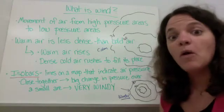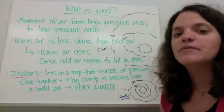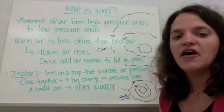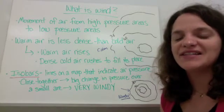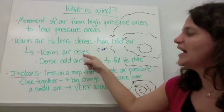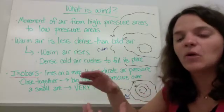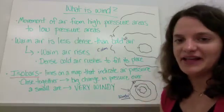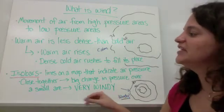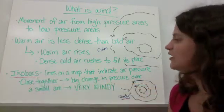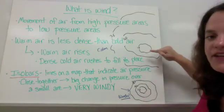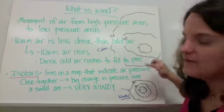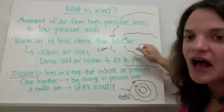So that brings us to: what is wind? Wind is the movement of air from a high-pressure area to a low-pressure area. Warm air is less dense than cold air, which is why warm air rises — it's not as heavy as cold air. Dense cold air then rushes in to take its place. On a map, meteorologists use isobars to indicate air pressure. Everything along an isobar has the same pressure value.